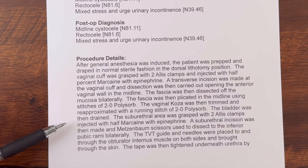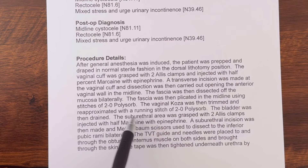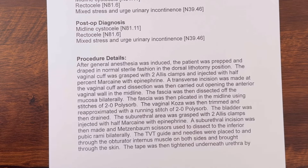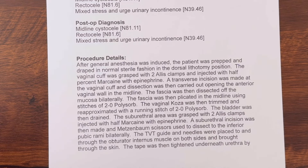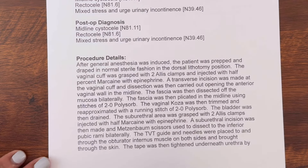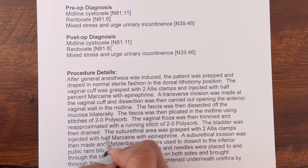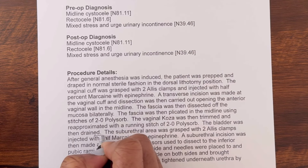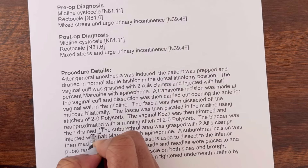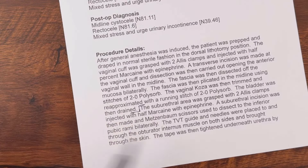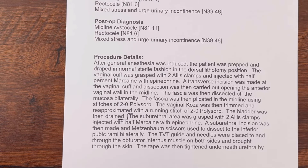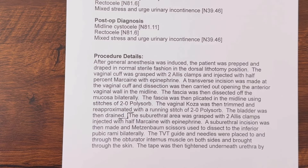The bladder was then drained. Right here we are moving on to the suburethral area, which is going to be that sling operation using the TVT. So this section — from here up — is going to be our anterior repair. Now we're getting into the sling operation.